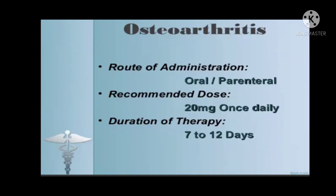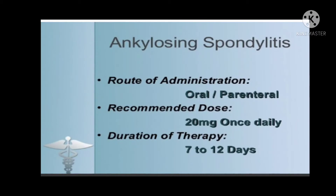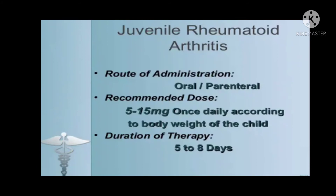In osteoarthritis, it is used as oral and parenteral preparation with recommended dose of 20 mg once daily and the same duration of therapy. In ankylosing spondylitis, the route of administration, recommended dose, and duration of therapy are the same. In juvenile rheumatoid arthritis, the recommended dose is 5 to 15 mg once daily according to the body weight of the child, with a duration of therapy of five to eight days.